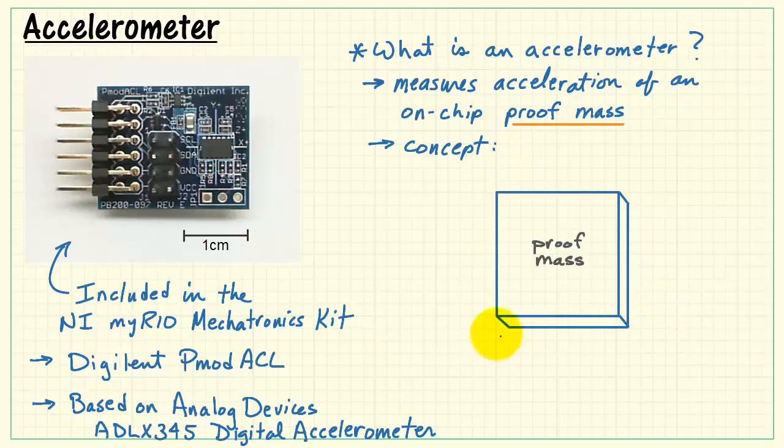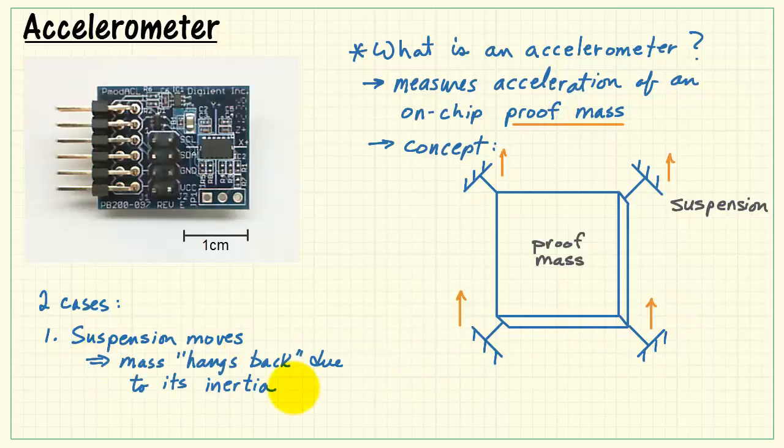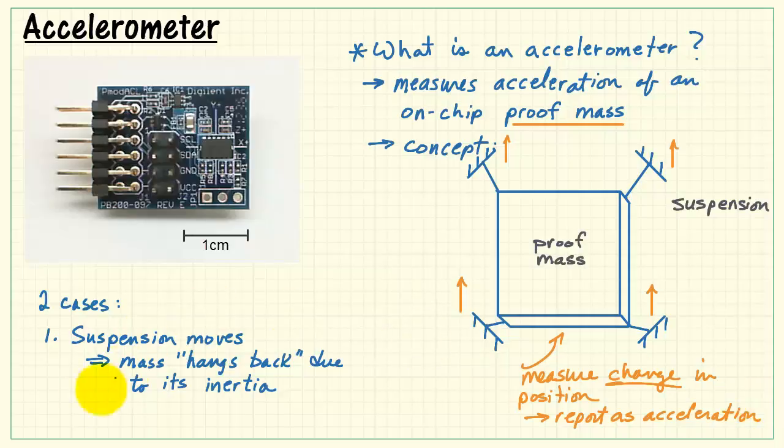Imagine that you have a little slab of material. This is called the proof mass. And at the four corners, it's attached to a frame by a suspension. Now there's two cases that can happen here. If we imagine that the suspension moves, say the suspension moves in this direction. Due to inertia, the mass wants to hang back. You'll see that there's a relative motion between the proof mass and the suspension. And you measure the change in position and report that as acceleration.